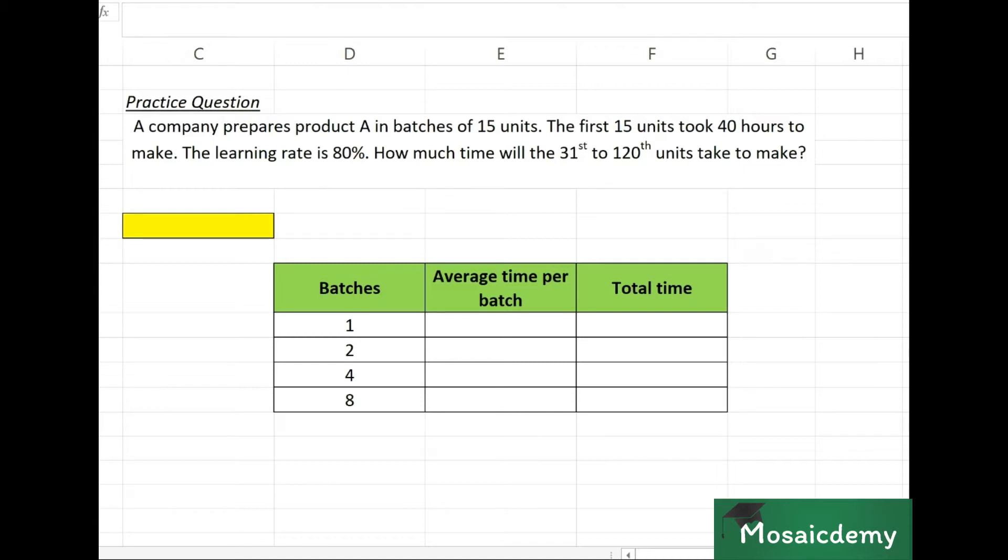So let's do the calculation. It says a company prepares product A in batches of 15 units, so we're dealing with batches and units. Our learning curve table needs to be in terms of batches. The first 15 units took 40 hours to make, the learning rate is 80%. How much time will the 31st to 120th units take to make?